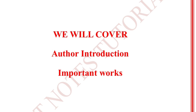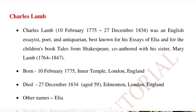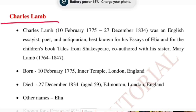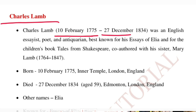I'll be covering the author and his important works, which is important from an examination point of view. Charles Lamb was born on 10th February 1775 and he died on 27th December 1834. He was an English essayist, poet, and antiquarian.